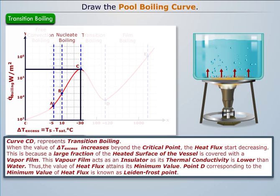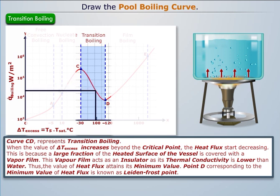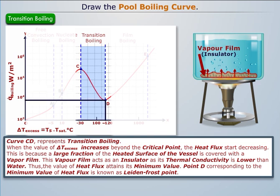Curve CD represents transition boiling. When Delta T excess increases beyond the critical point, the heat flux starts decreasing. This is because a large fraction of the heated surface of the vessel is covered with a vapor film. This vapor film acts as an insulator, as its thermal conductivity is lower than that of water. Thus, the value of heat flux attains its minimum value. Point D, corresponding to the minimum value of heat flux, is known as the Leidenfrost point. In curve CD, both nucleate and film boiling take place partially, so this stage is known as transition boiling.